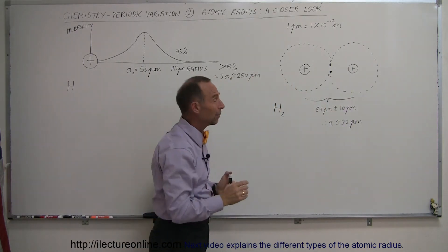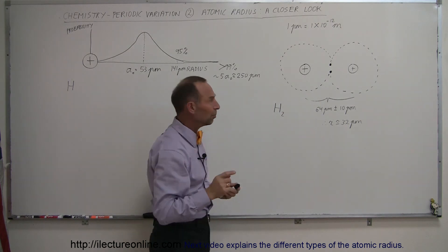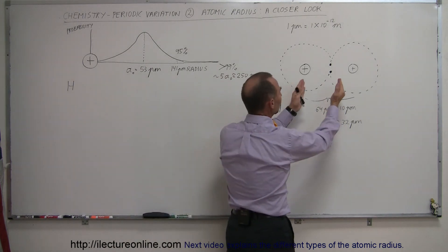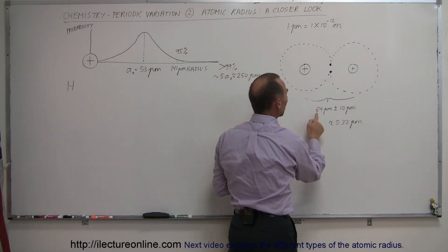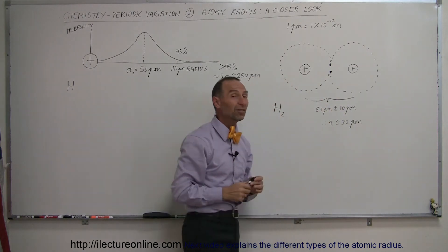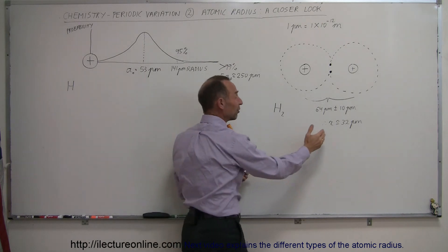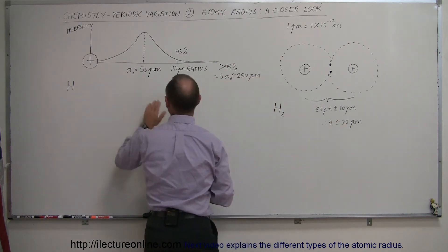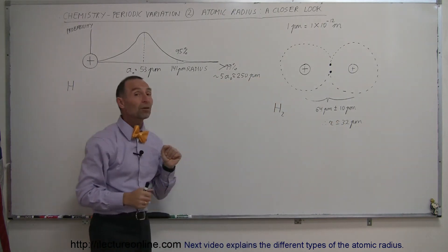And from that we can then deduce the radius of the atom when it's in a bond like that. And in this particular case, when we put two hydrogens together and they bond together like that, we find that the distance between the nuclei is about 64 picometers, which gives you a radius of about 32 picometers, which is a lot less than the 53 picometers you see there.